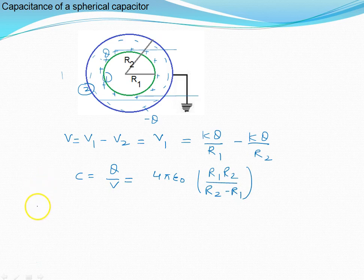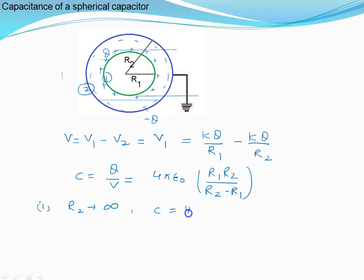If R2 tends to infinite, the capacitance becomes C = 4πε₀R1. This means we can say an isolated sphere can be looked upon as a spherical capacitor whose outer sphere is at infinity.